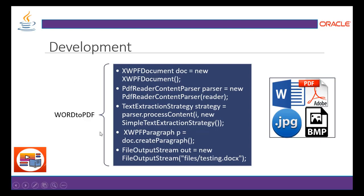Now let's look at the development for Word to PDF. We have to first include the iText jar file API and the POI jar file. These two APIs help implement this feature. XWPFDocument is a class that creates and reads the PDF. We use a content parser to process the content and extract text from the PDF. Once done, we create a paragraph, write it, and convert it into the DOCX format — so we are converting from PDF to DOCX via an output stream.